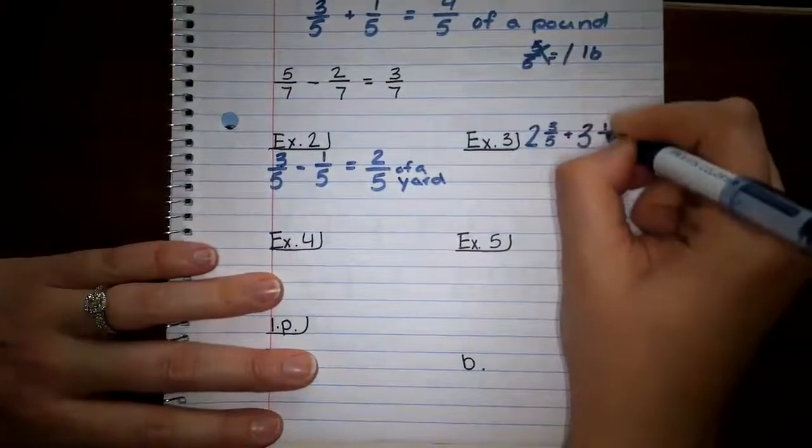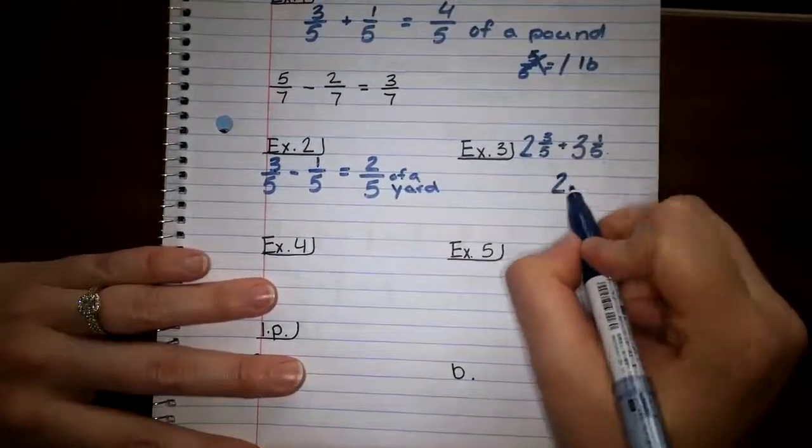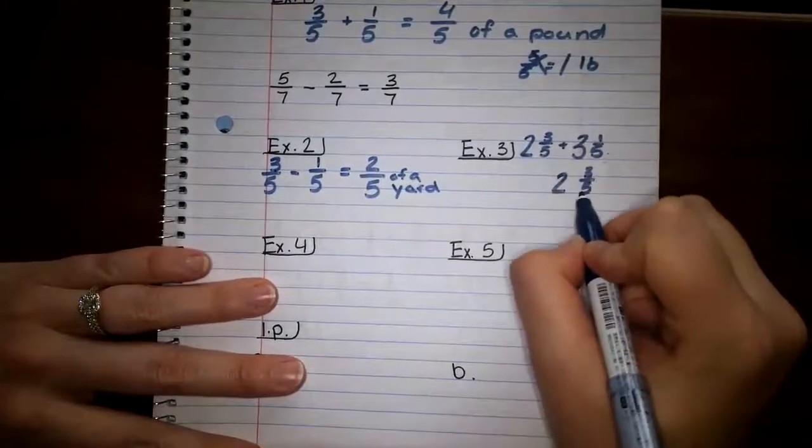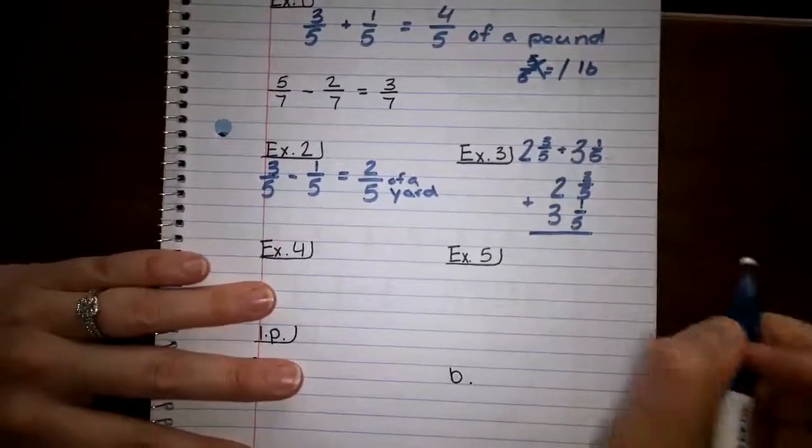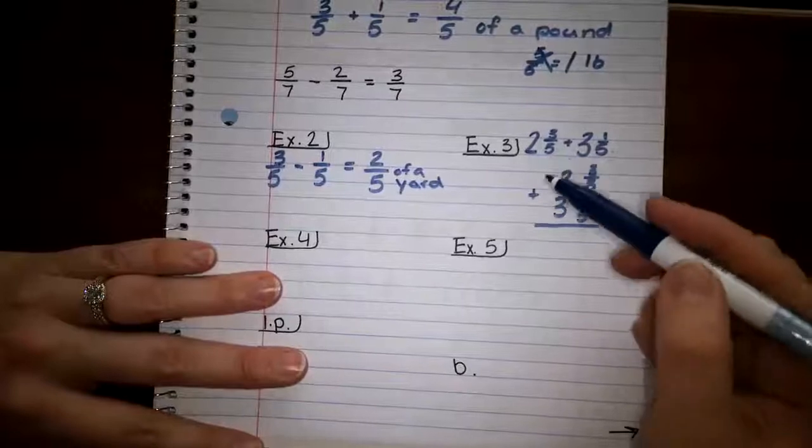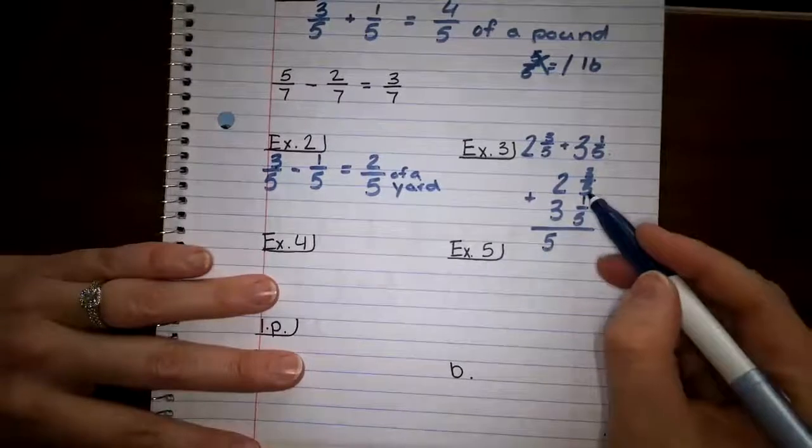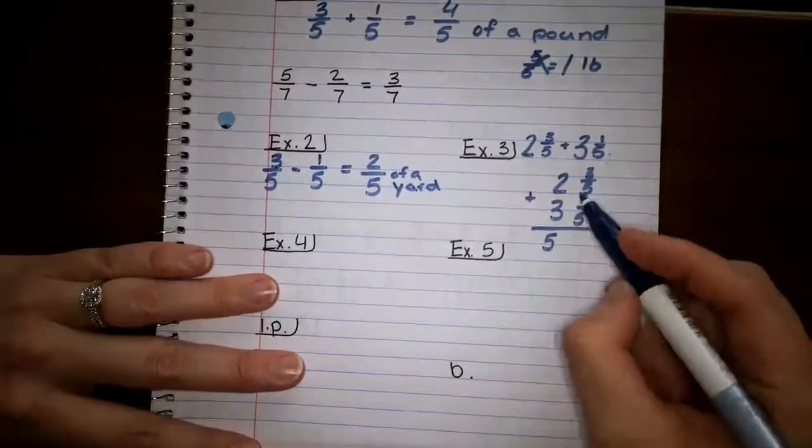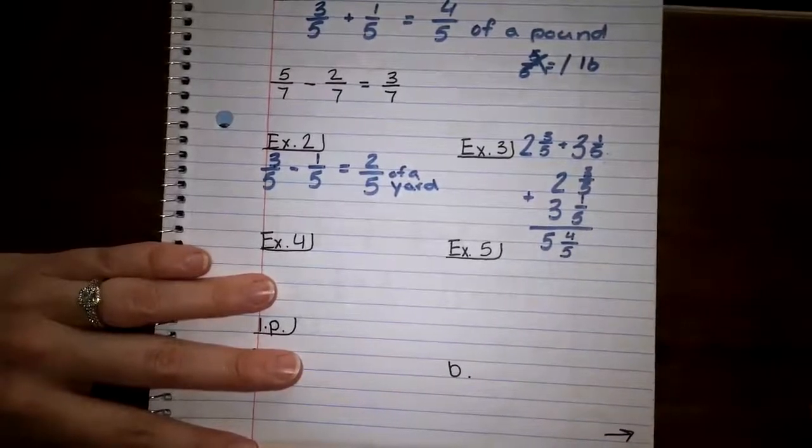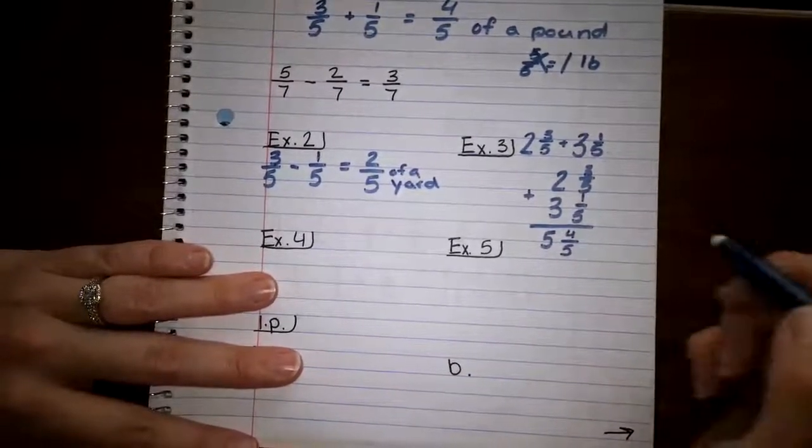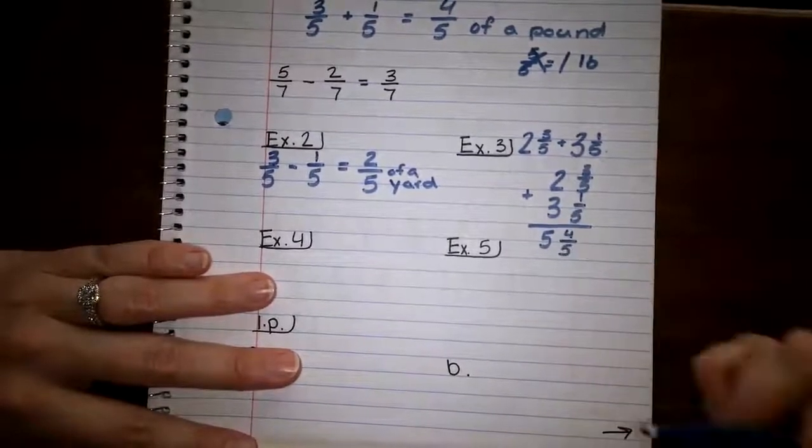Plus three and one fifth. But they told us that it could be easier to write it vertically. So I'm going to write two and three fifths. Plus three and one fifth. Now I'm going to add my whole numbers first. So two plus three is five. Then I'm going to add my numbers. Remember our denominator doesn't change. But three plus one is four. And my denominator doesn't change. I get five and four fifths. So the sum of two and three fifths plus one and one fifth is five and four fifths.